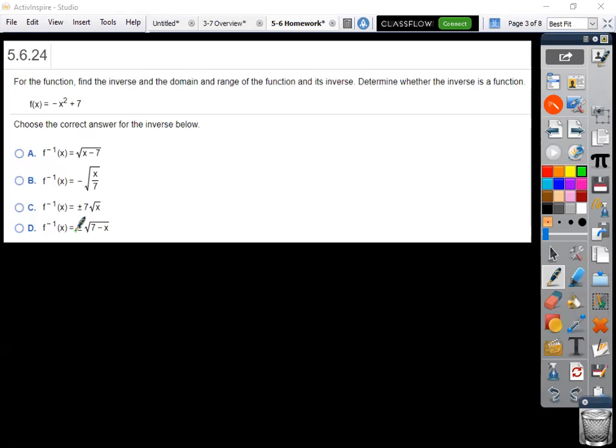All right, so we've given this function f(x) equals negative x squared plus 7, find the inverse. So just like we did on the last one, f(x) is like y equals negative x squared plus 7, so you flip the x and the y around for an inverse and now we have to solve for y.